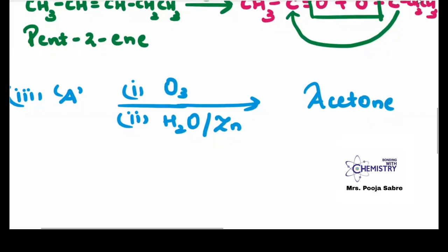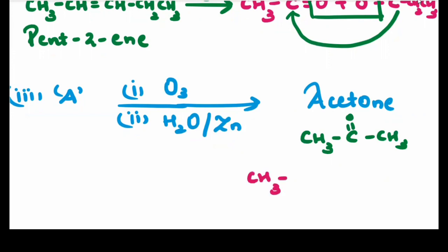The next question is A on ozonolysis gives acetone. So again the same way, first write down the structure for acetone. It is CH3C(=O)CH3. So we will be getting 2 moles of acetone. So simply arrange the structure. This is CH3C double bond O. The CH3 I will write it down on top.